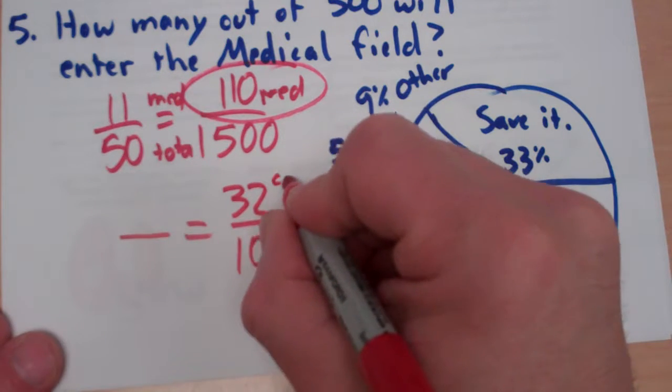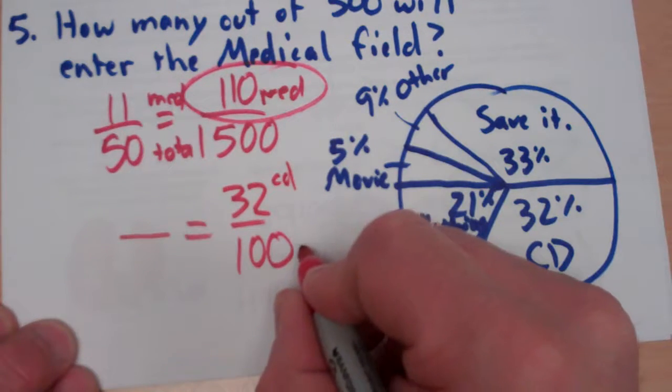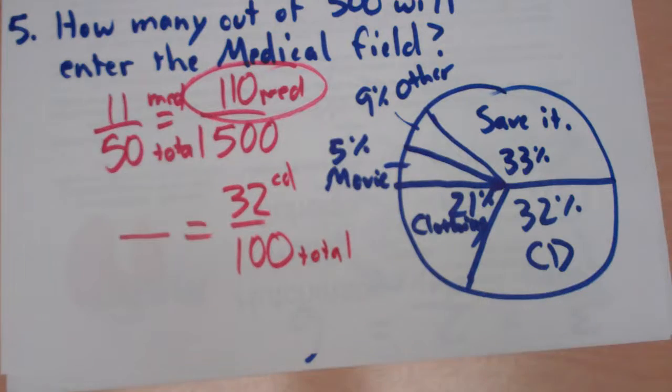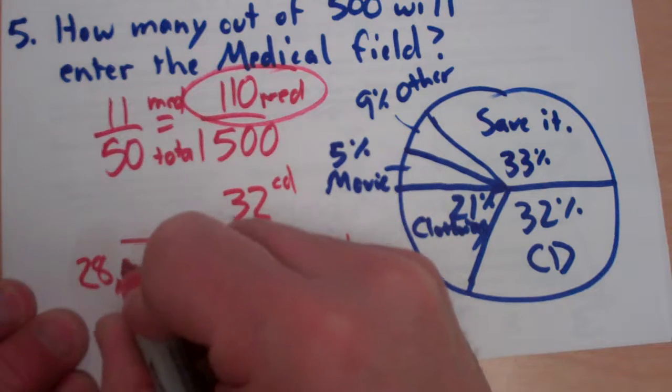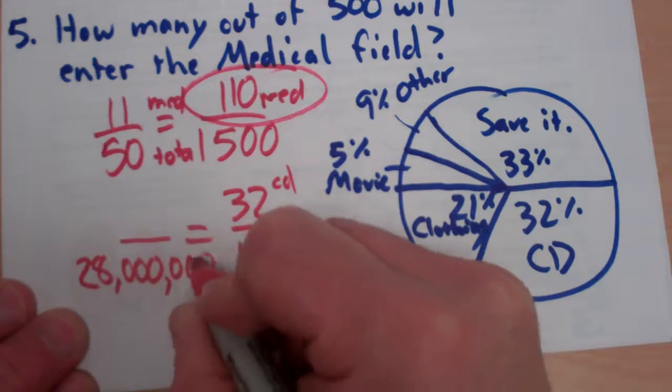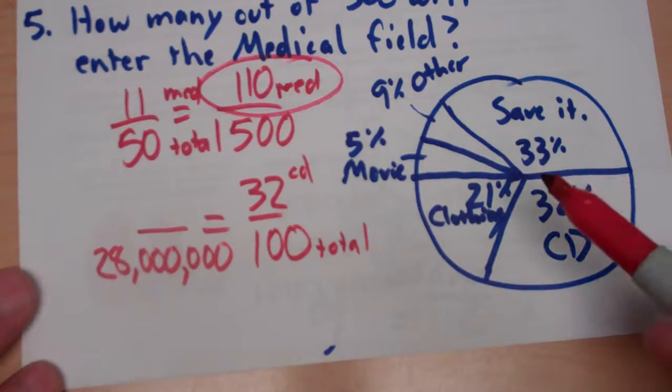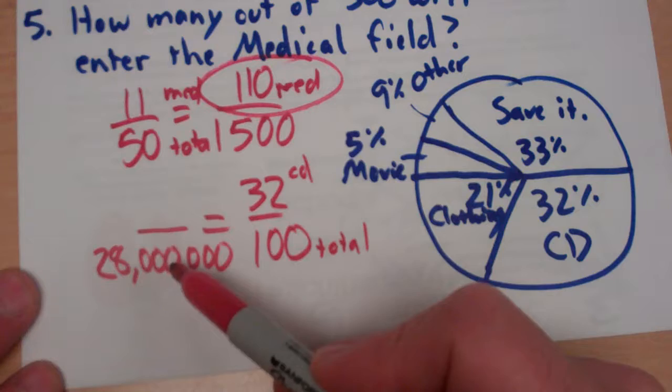32 out of 100 are going to choose a CD. Remember, this is the percent that choose CD. This is the total, all 100% of the people. And then they talked about how many people there actually were. We want this to represent 28 million people.